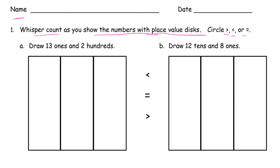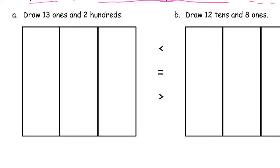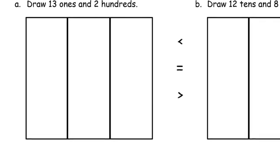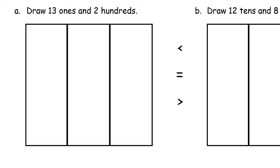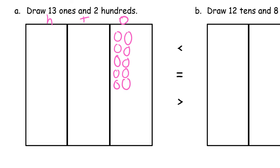So draw 13 ones and two hundreds. I'm going to zoom in here so I can draw them. So H, T, and O. I'm going to draw 13 ones: 1, 2, 3, 4, 5, 6, 7, 8, 9, 10 — so I've got my little 10 group there — 1, 2, 3, and these are all ones.